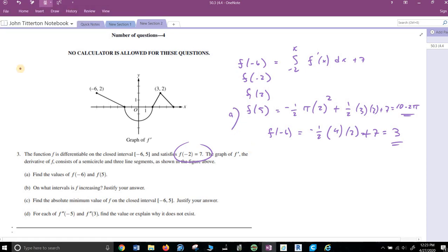Part b: one interval is f increasing. This gets a lot of people because they say it's going negative, it's above the graph. We look all the way from left to right and it's increasing anytime it's above the x-axis. So the answer is simply -6 to -2 and from 2 to 5. That's where f prime of x is greater than zero, f is increasing.